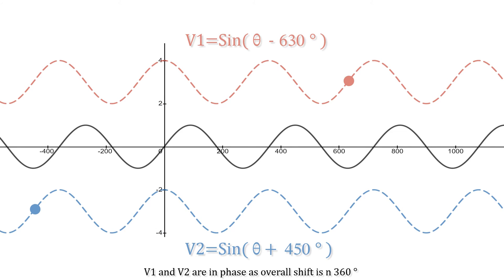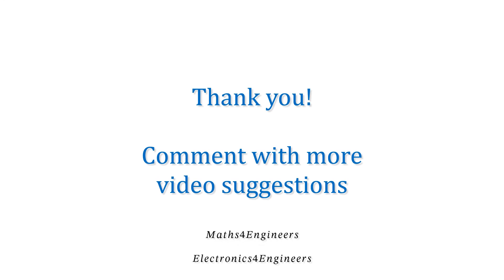Again, with these two voltages V1 and V2, V1 is leading by three quarters of a cycle and V2 has a phase lag of one and a quarter cycles. Between them is 720 degrees, which is a multiple of 360, so they're in phase. The overall phase shift here is 1080 degrees — three whole waveforms — so they are in phase with each other. Thanks for watching, I hope it was useful, and please comment with more video suggestions.